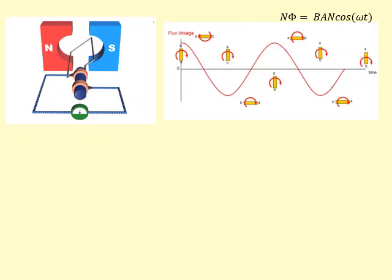So this induces an EMF, and we can figure out the EMF induced by taking the gradient of this graph, because the rate of change of flux will give you the EMF, actually negative of the rate of change of flux.